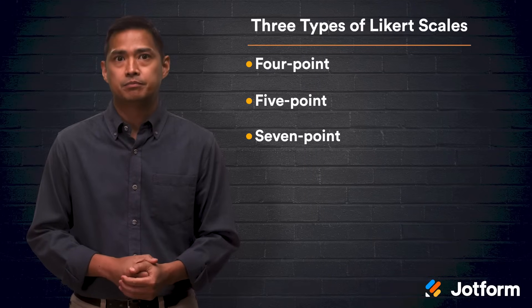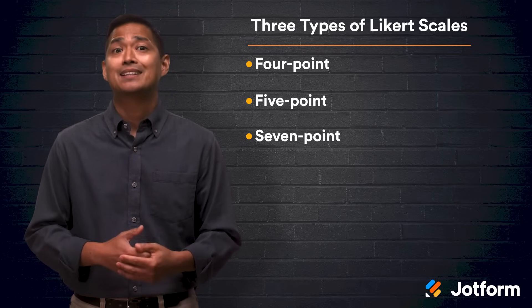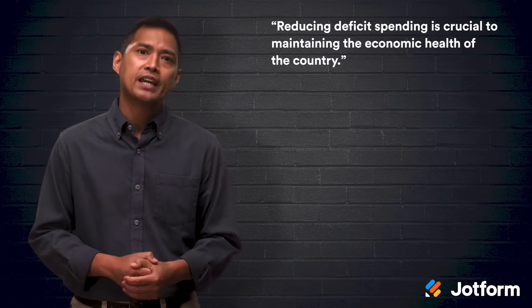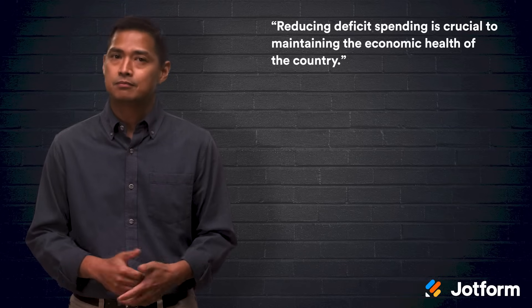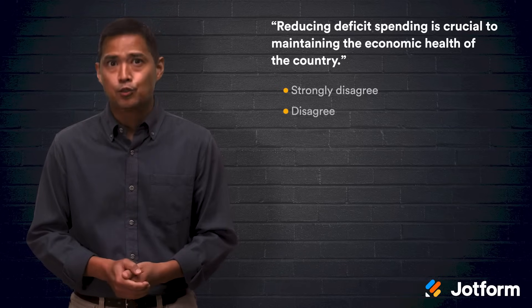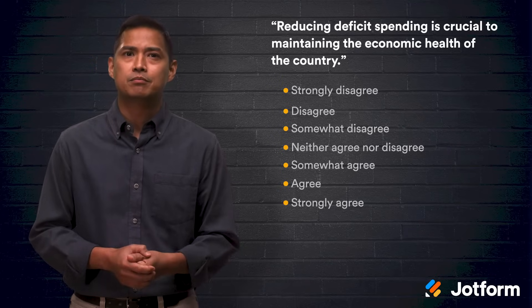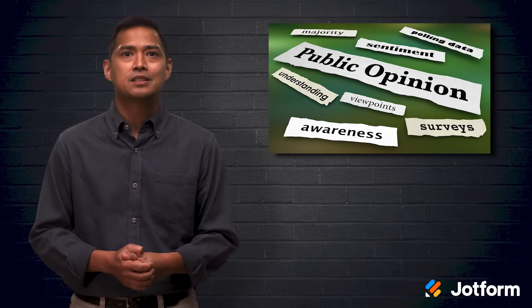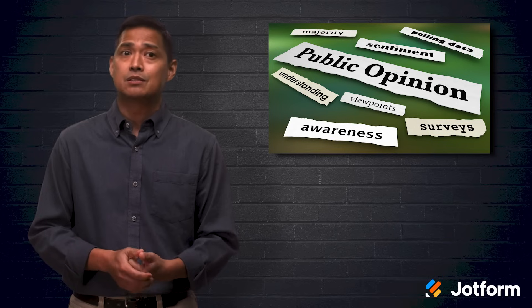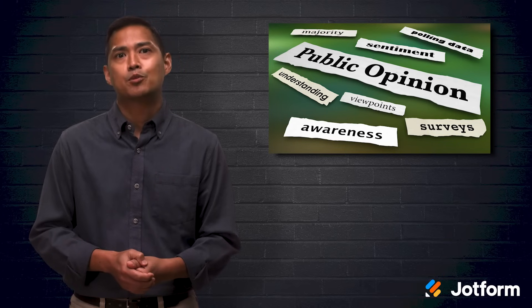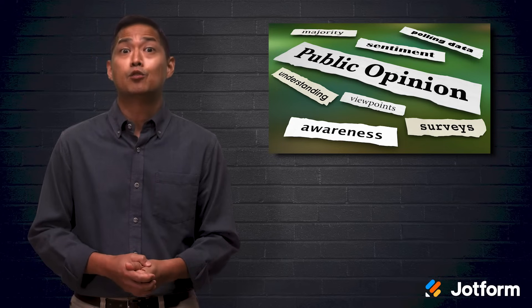Last, we have the seven-point Likert Scale. It's very similar to the five-point scale, but it adds two more intermediate options between the neutral response and extreme response options. Here's an example from a public opinion survey: 'Reducing deficit spending is crucial to maintaining the economic health of the country.' The response options are: strongly disagree, disagree, somewhat disagree, neither agree nor disagree, somewhat agree, agree, and strongly agree. The seven-point scale is considered better for determining how much importance a survey taker places on something. In this example, we gather the intensity of their individual opinion on reducing deficit spending.